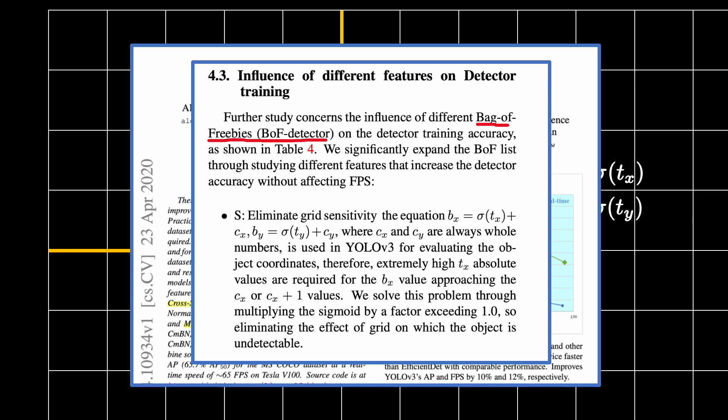And as part of bag of freebies, they solve this grid sensitivity problem. The problem that I illustrated earlier, where if your center of the bounding box is on the walls of the grid cell, it is called a grid sensitivity problem. You can see that they are also talking about how predicting the high TX and TY absolute values is going to be a challenging thing in order to resolve the grid sensitivity problem.